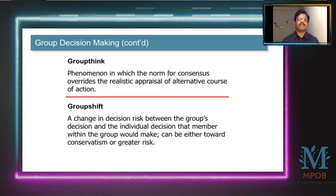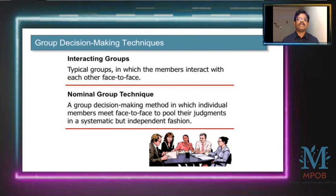Further, there are interacting groups — typical groups in which members interact with each other face to face. Then there is the nominal group technique, a group decision making method in which individual members meet face to face and pool their judgments in a systematic but independent fashion. So you'll find several types of groups and decision making processes.